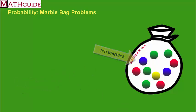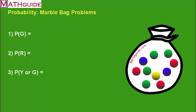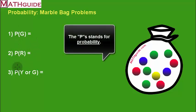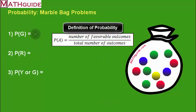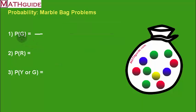Now with the probability problems shown, we just have to understand what this notation means. The P stands for probability, and then the capital letters inside the parentheses talk about the condition. The condition here is: what's the probability of pulling a green marble? The way probability works is you put the number of favorable outcomes in the numerator and the total number of outcomes in the denominator. There are 4 green marbles out of 10, so the probability is 4/10.